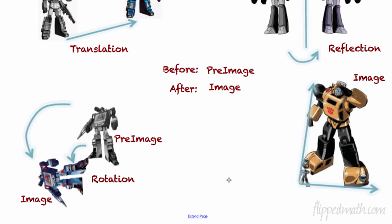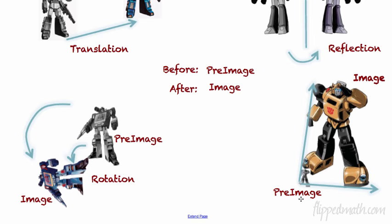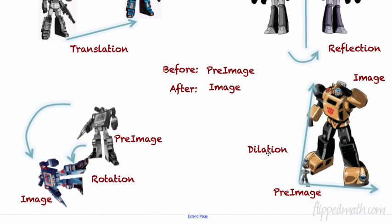The fourth type is dilation. We're not creating a full lesson on it because it's not in our standards, but if you take a pre-image and magnify it — by multiplying the coordinates of each point — you can either grow or shrink it. That is called a dilation. You've heard of dilating your pupils — they open up big so the doctor can see inside. So those are the four types of transformations.